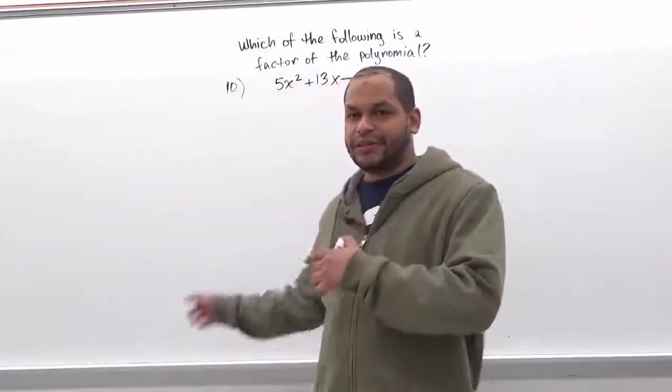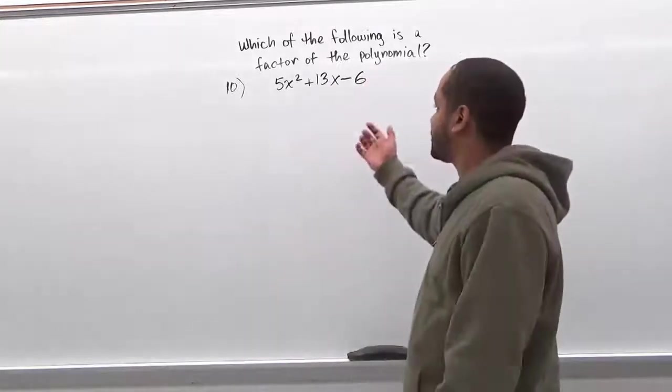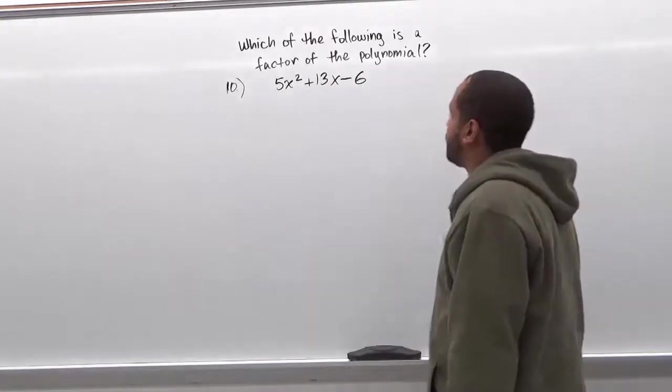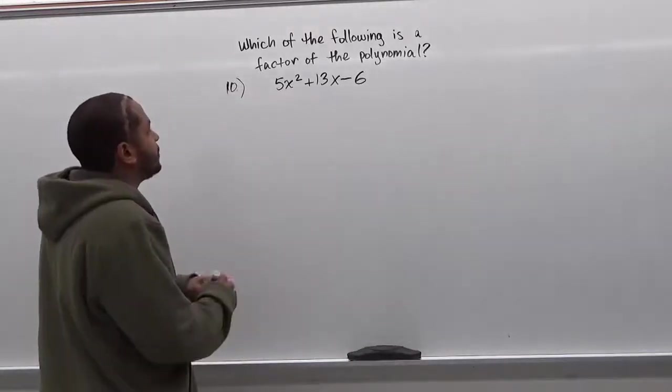After finishing the trial and error method we're now going to move on to the grouping method. To do the grouping method it's similar to the AC method. We're going to find something to substitute the middle term with, with two terms instead of one.